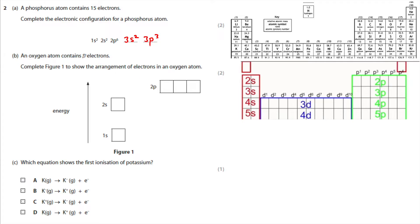An oxygen atom contains eight electrons — complete the figure showing the arrangement. Remember electrons fill from the bottom and they fill with opposite spin so they repel less. The first shell takes 2, then you continue filling: electrons 3, 4, 5, 6, 7, then you come back and start filling with the opposite spin for the 8th electron, and we're only going up to eight electrons.